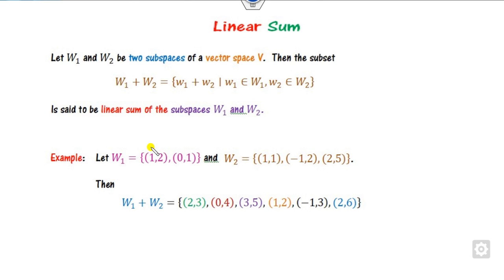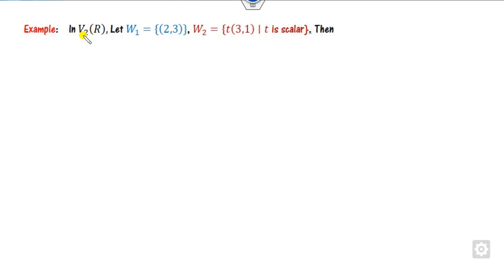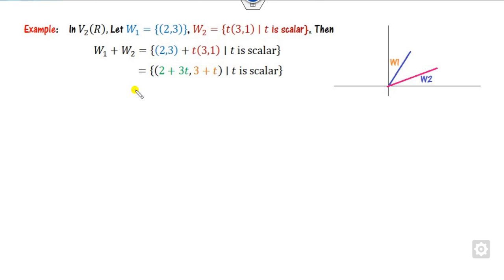For example, if you have two subspaces like these, you can add them: the linear sum gives elements like (2,3), (1,2), (0,4), and so on. In general, if you have R² — the xy plane — and w1 and w2 are subspaces, you can find their sum like shown here.